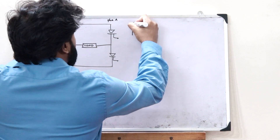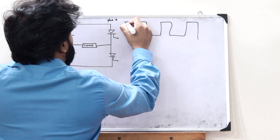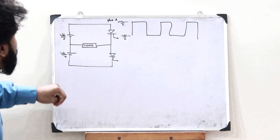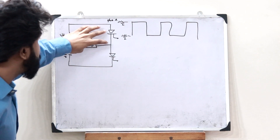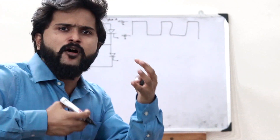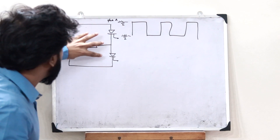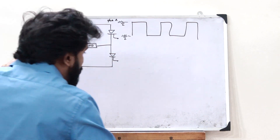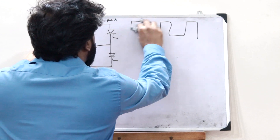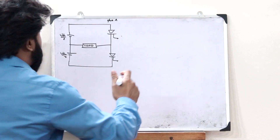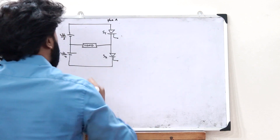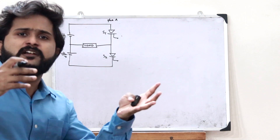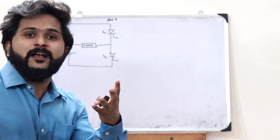So we obtain plus VDC/2 and minus VDC/2 by alternately turning on S1 and S2. If we formulate a mechanism to alternatively turn on these two switches, we can obtain a pulse width modulated signal across this particular load. For that, we use two signals — a sine wave and a triangular wave — to alternately turn S1 and S2 on.